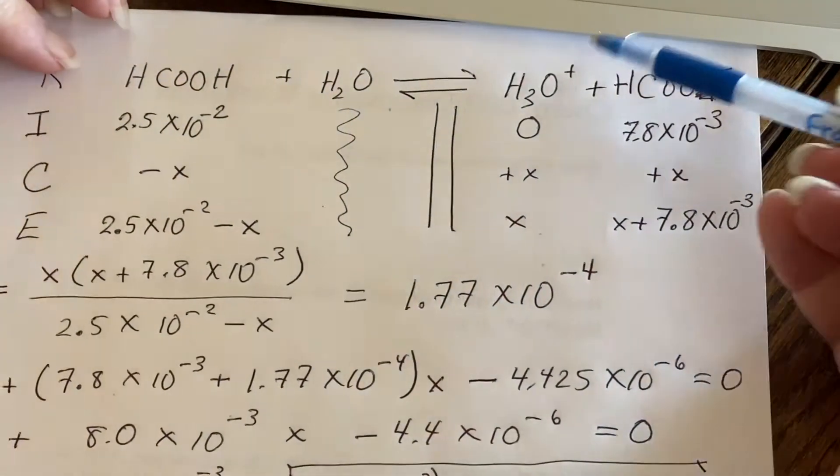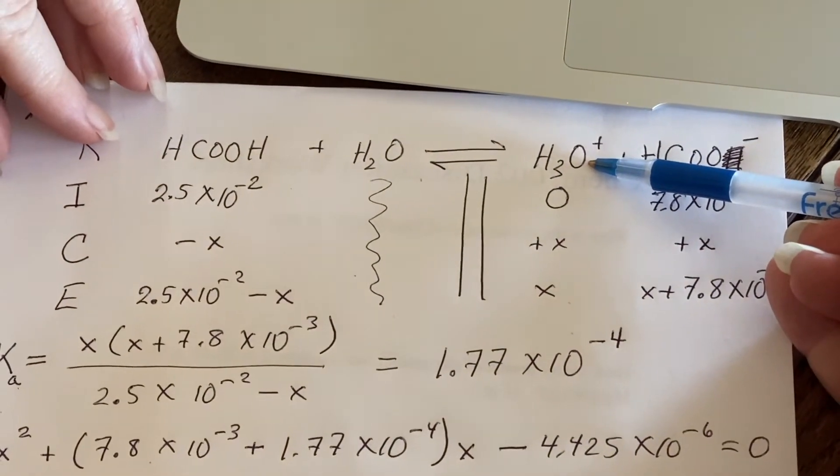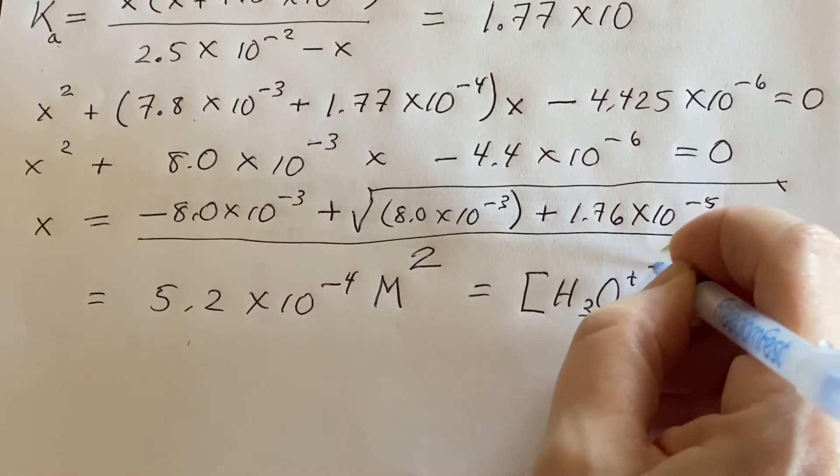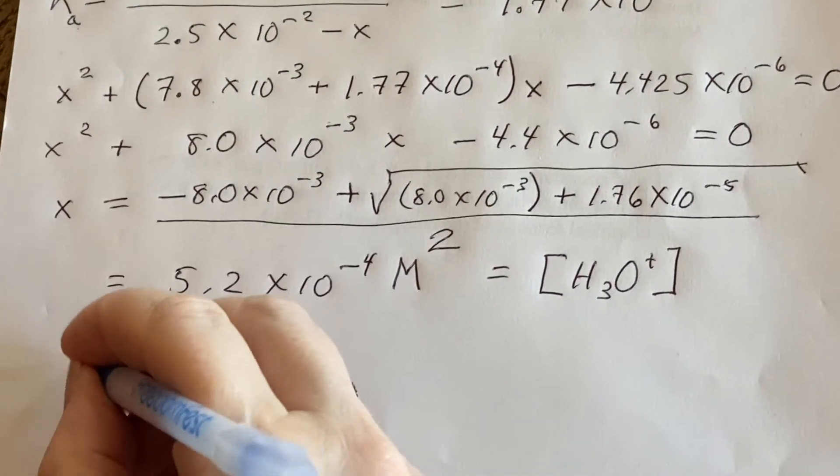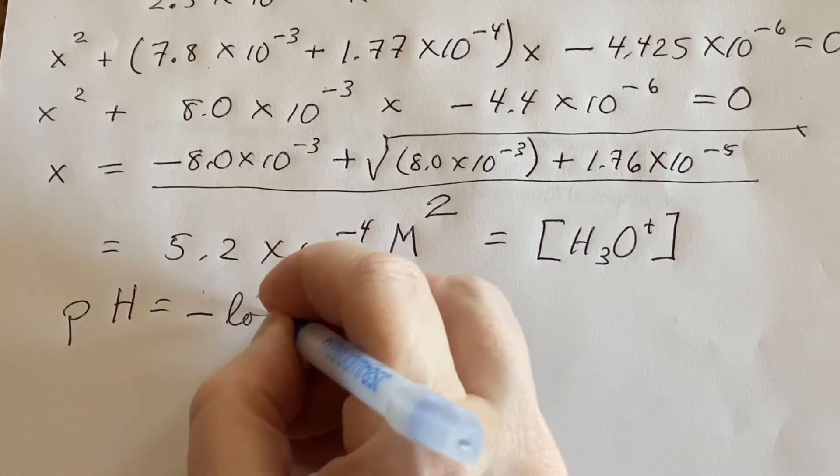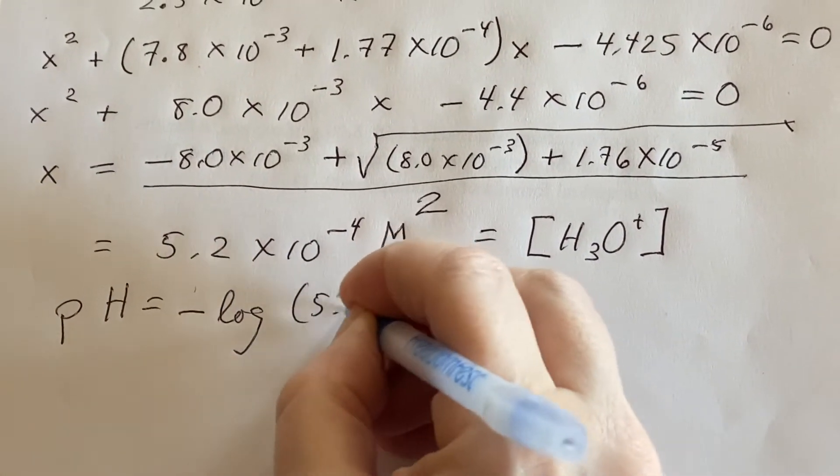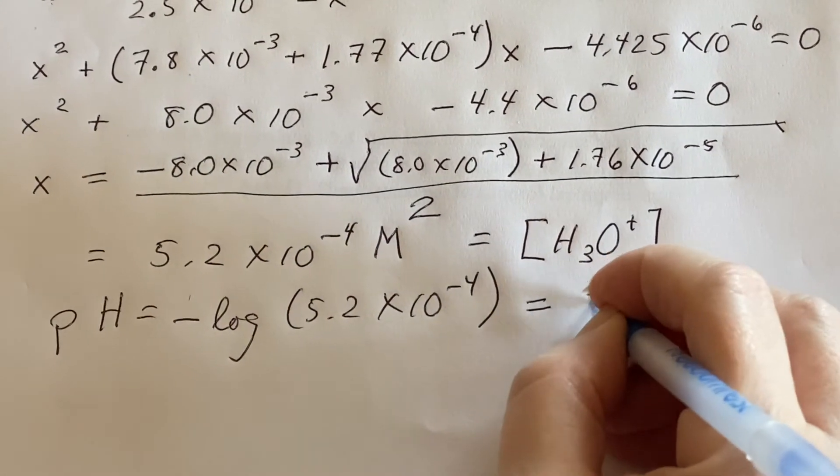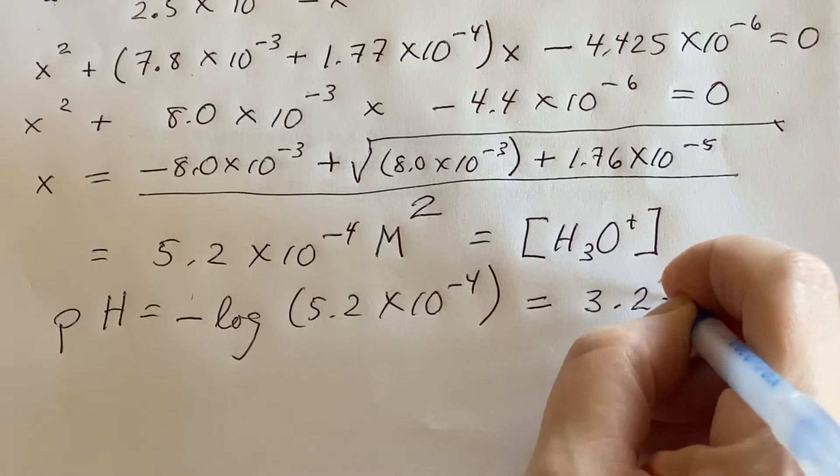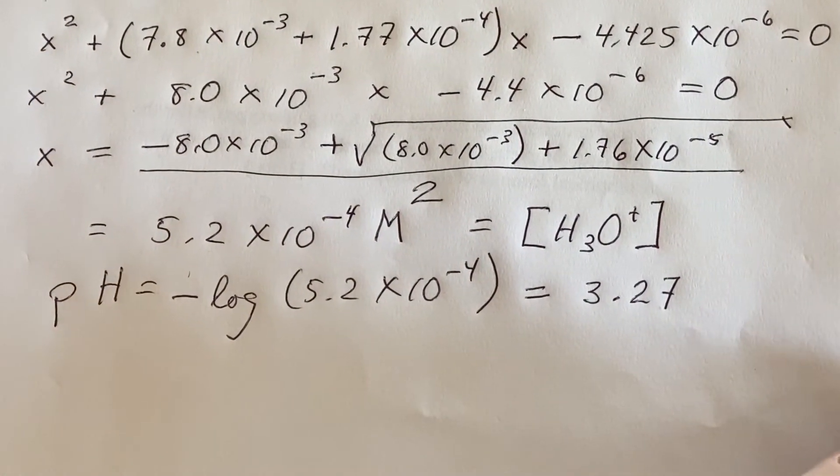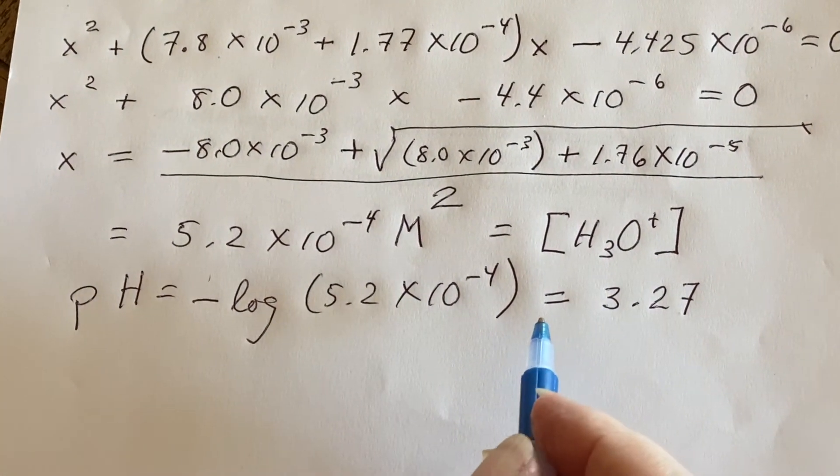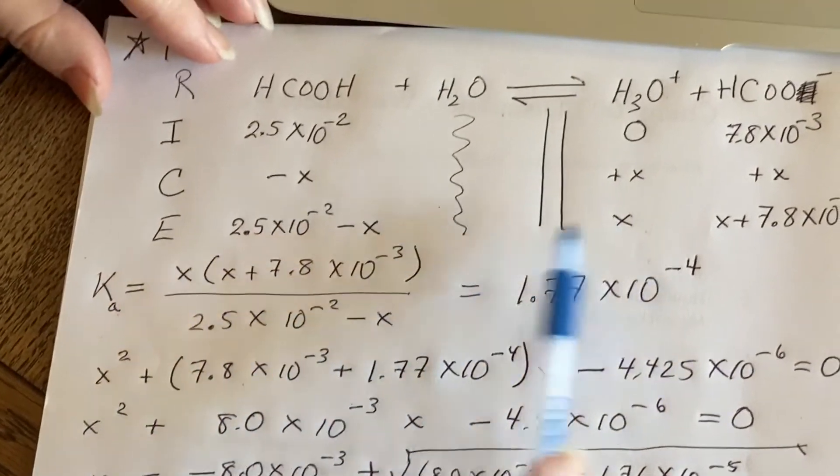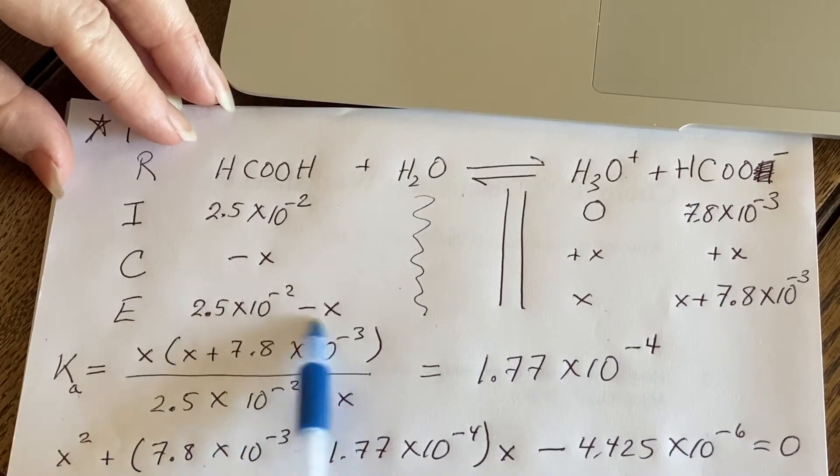X was the hydronium ion concentration. And since they asked for the pH, I'll take minus the log of this. And I will get a pH of 3.27 and this was particularly awful. Why was it so bad? Well, it was so bad because we ended up with X being altered in two different places.